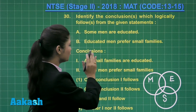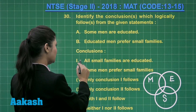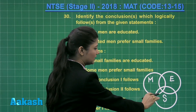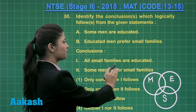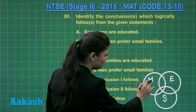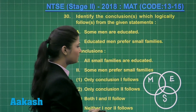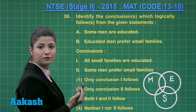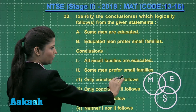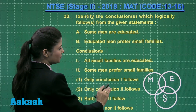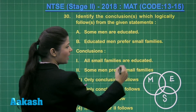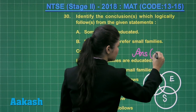On the basis of this diagram, let us see which conclusion follows. The first conclusion states all small families are educated — we cannot say that according to this diagram. The second conclusion states some men prefer small families, which can definitely be stated through this diagram, as there is a common region between men and small families. So only conclusion two follows, making option number two the correct answer.